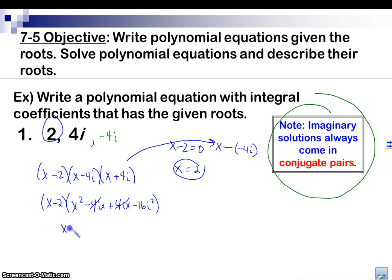We get x minus 2, times x squared, i squared is negative 1, so x squared plus 16. Multiply it out one more time. We get x cubed minus 2x squared, x cubed minus 2x squared, plus 16x, minus 32.